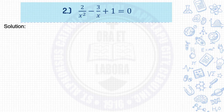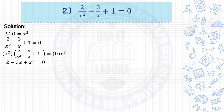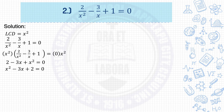Number 2: 2 over x squared minus 3 over x plus 1 equals 0. Determine the LCD. The LCD of x squared and x is x squared. Write the given and multiply both sides by the LCD. Multiplying x squared by the expression gives 2 minus 3x plus x squared equals 0. Arrange into general form: x squared minus 3x plus 2 equals 0.